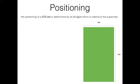Next I want to illustrate the positioning of a UIView. First, it's important to know that the positioning of a UIView is determined by its origin property. The origin is the CGPoint that we saw before on the previous slide, and the origin is always relative to the superview. We're going to see what this means.